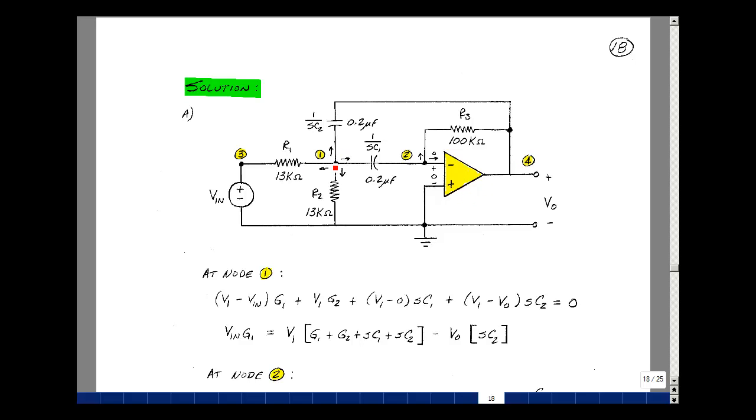I let all the currents leave node 1, and I'm going to set that equal to zero. Current flowing in R1 is going to be node voltage 1 minus node voltage 3, but node voltage 3 is Vin, divided by R1 or times G1. The current in R2 is just going to be node voltage 1 divided by R2 or times G2. The current in the capacitor is node voltage 1 minus node voltage 4, which is Vout, divided by 1 over SC2, and that's this term right over here.